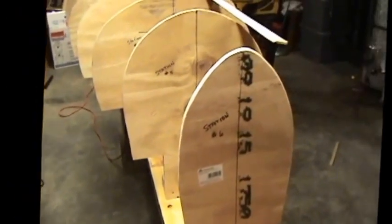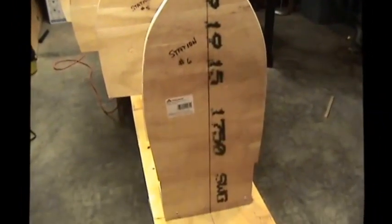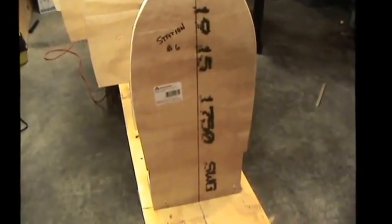Then you mark all your stations with a center line on them. I think you can see that here. You just make that center line match up on the chalk line.